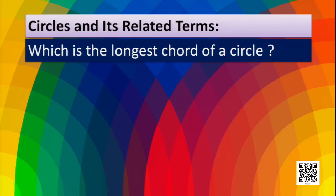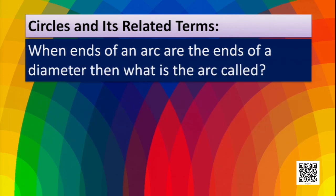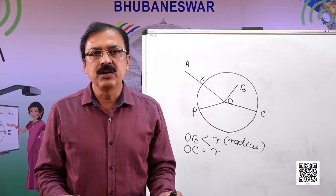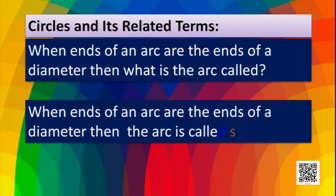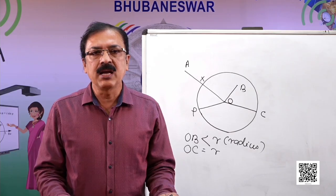Which is the longest chord of a circle? The longest chord of a circle is called the diameter. When the ends of an arc are the ends of a diameter, the arc is called a semicircle, since the diameter divides the circle into two equal parts. What is the region between an arc and a chord of a circle? The region between an arc and a chord of a circle is called a segment.